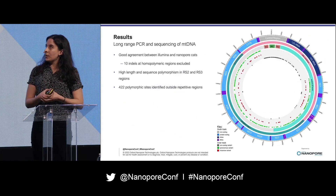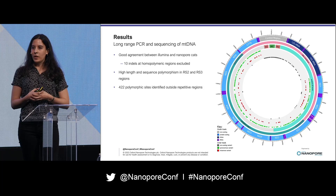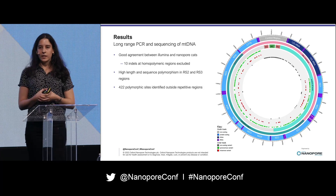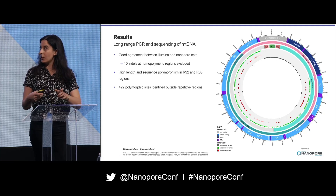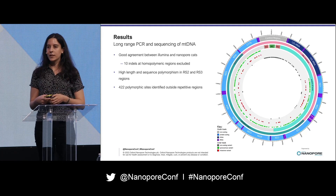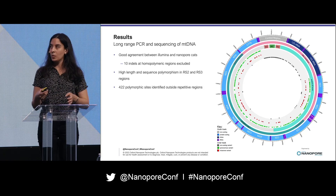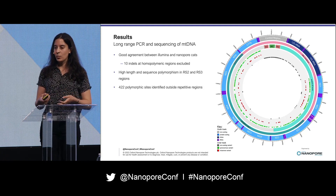There was a really good agreement between the Illumina and Nanopore cats. There were 10 indels found at homopolymeric regions in runs of 5 to 8 nucleotides, which were excluded, and when these were present in the protein coding regions they led to frameshift mutations. There was also a high length and sequence polymorphism seen in the repetitive sequences of RS2 and RS3, which are short tandem repeat blocks, and which has previously been reported.